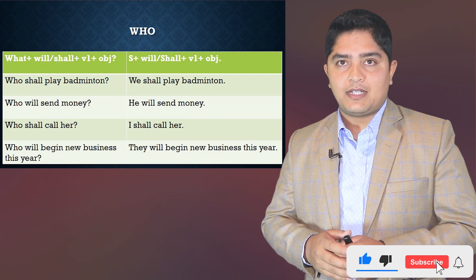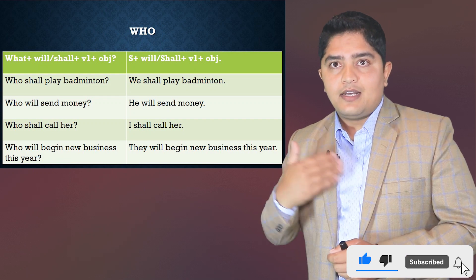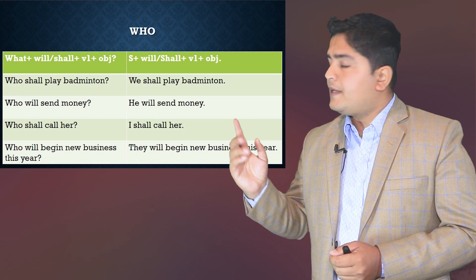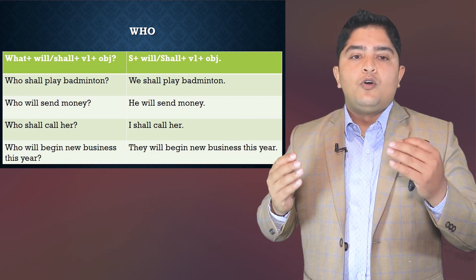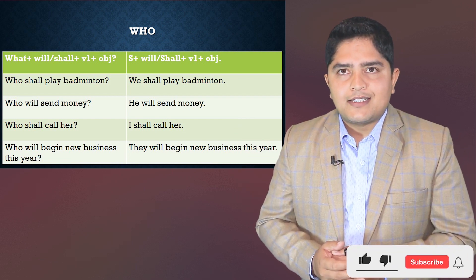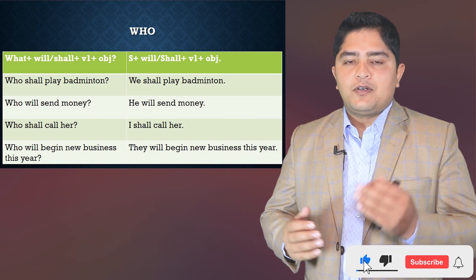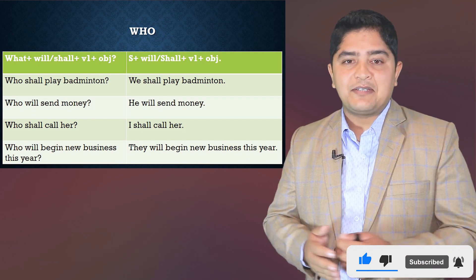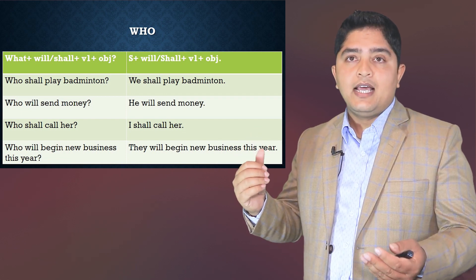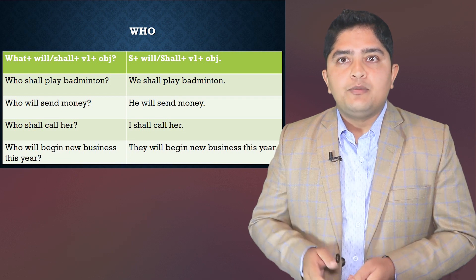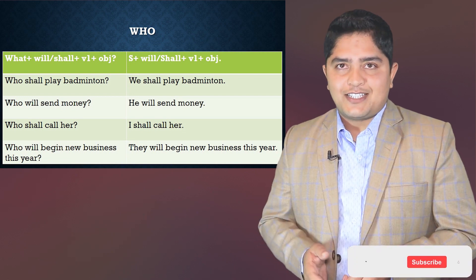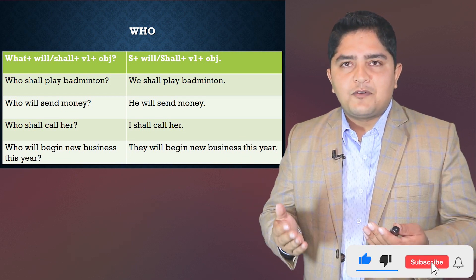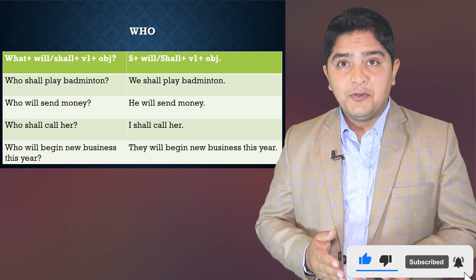Similarly, 'Who shall call her?' — answer: 'I shall call her on the phone.' And 'Who will begin new business next year?' — answer: 'They will begin new business next year.' This is how we make questions and answers using 'who' in simple future tense.